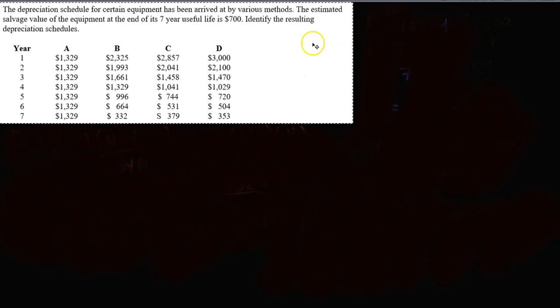It's basically asking you to determine for each column, for each schedule, there's four schedules here A, B, C, D, which one is determined by straight line method, which one is determined by declining balance, which one is by double declining balance, and which one is found using SOYD, sum of years depreciation.